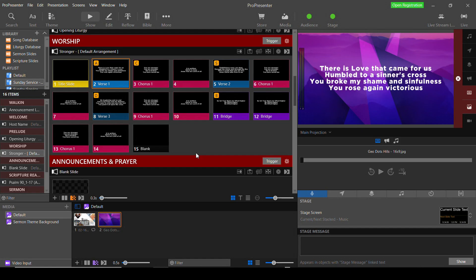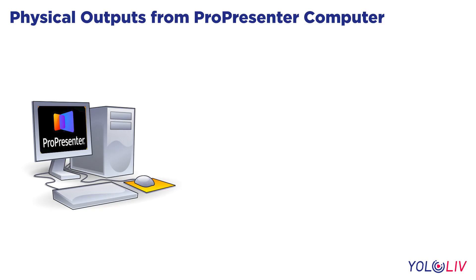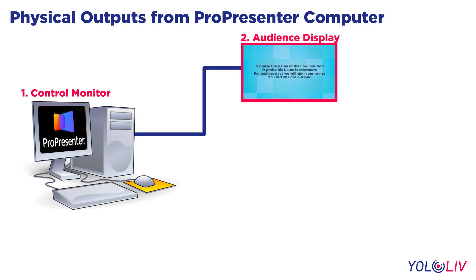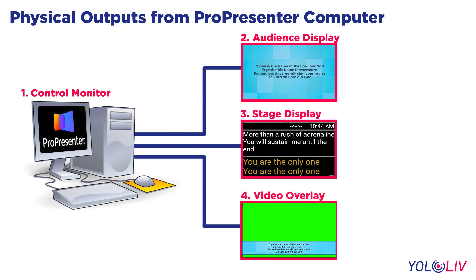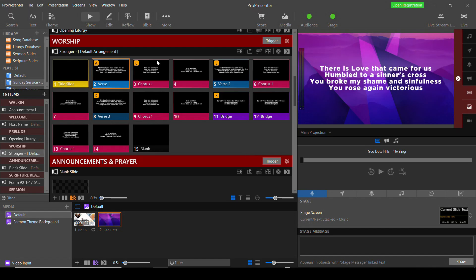In ProPresenter, we need to configure the actual physical output to send our overlay feed out from, and this is an important point. You need a computer and graphics card that can support enough display outputs. A usual configuration would be four display outputs: one for your control monitor, a second for the audience display, third is usually for stage display for musicians and people on stage, and the fourth output will be our overlay send to the YoloBox Pro.